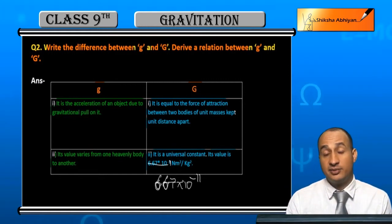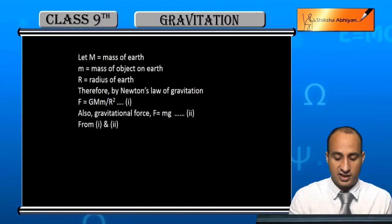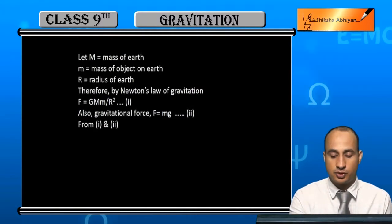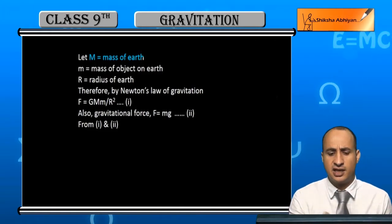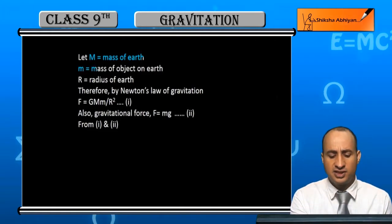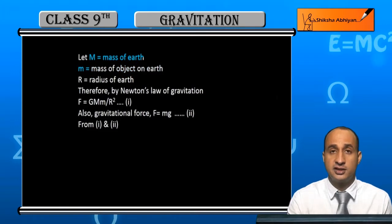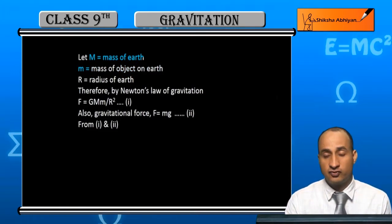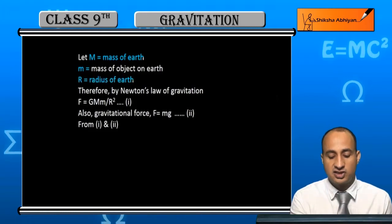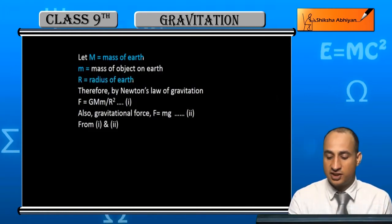Now we have to derive the relation. Here I will take some convention. Let M = mass of earth, m = mass of object on earth. R = radius of earth. Capital M is mass of earth, small m is mass of object on earth.